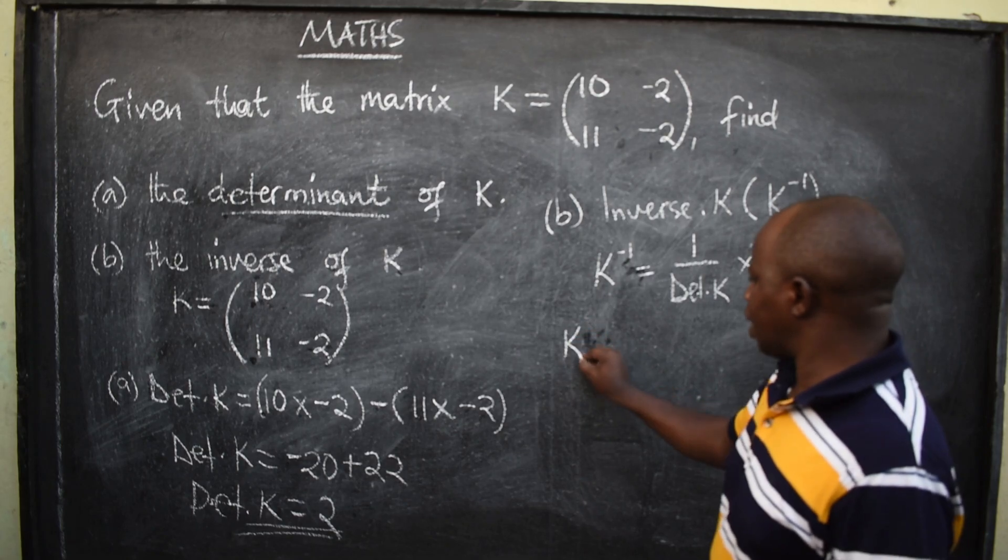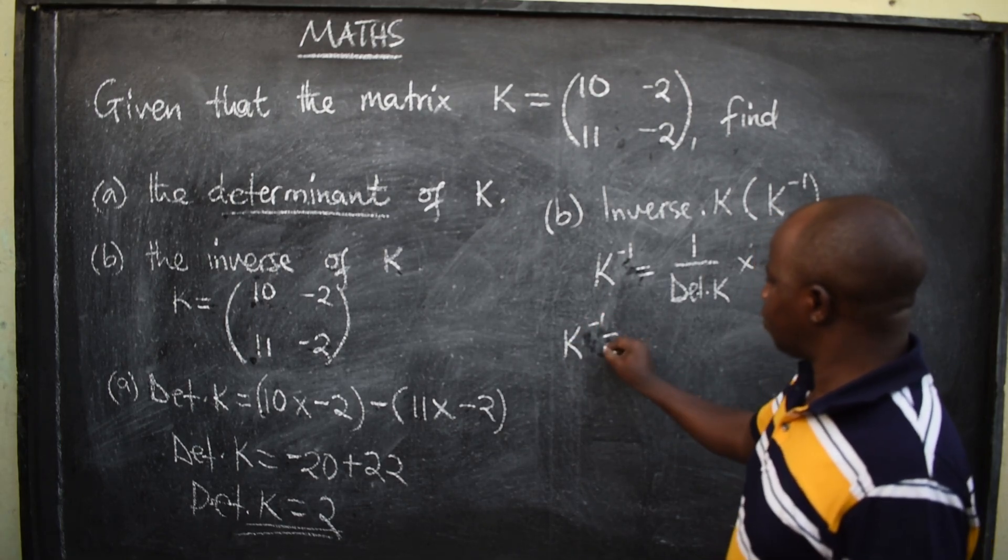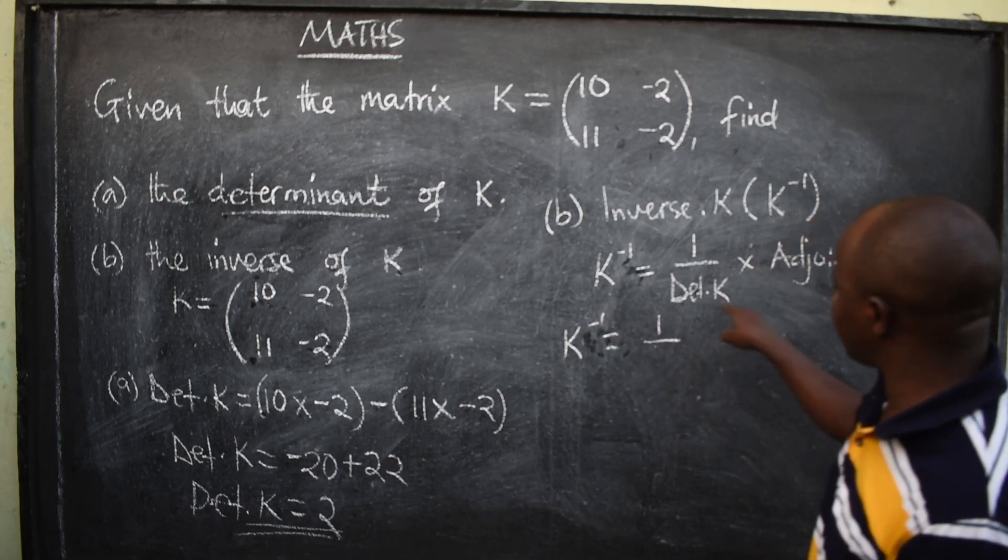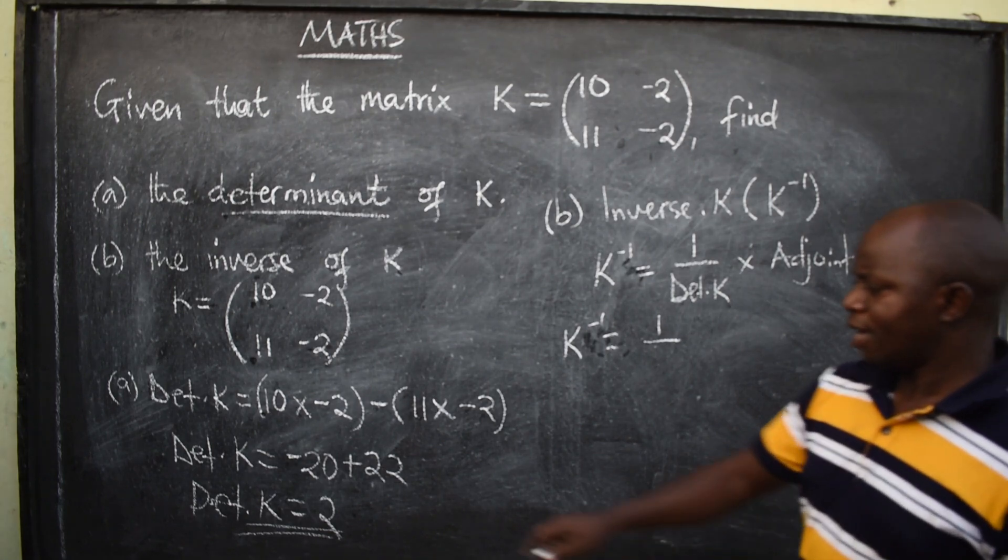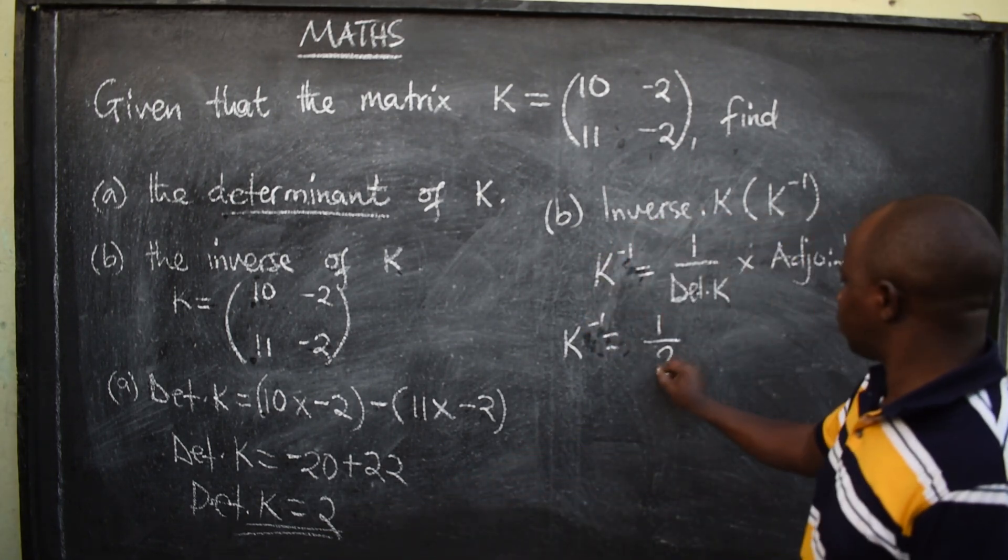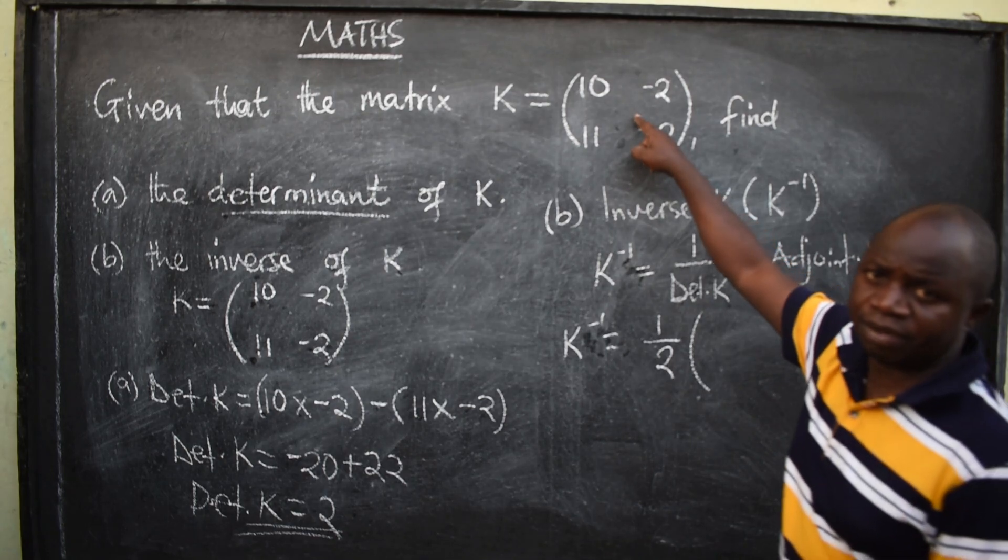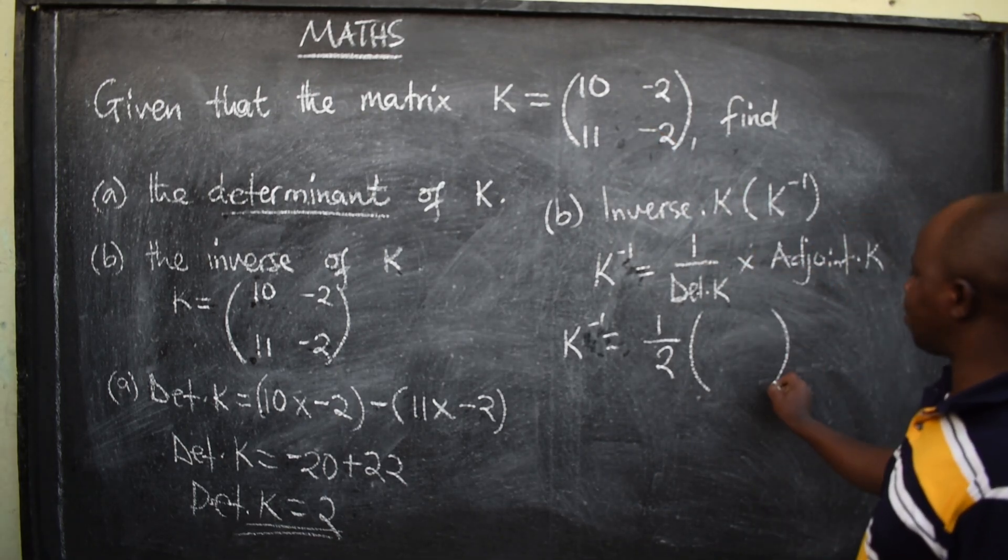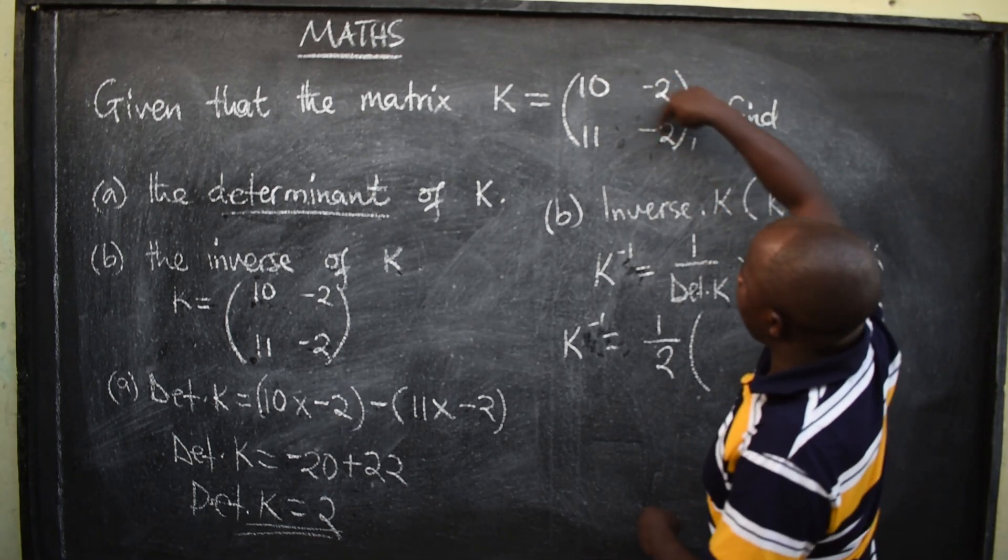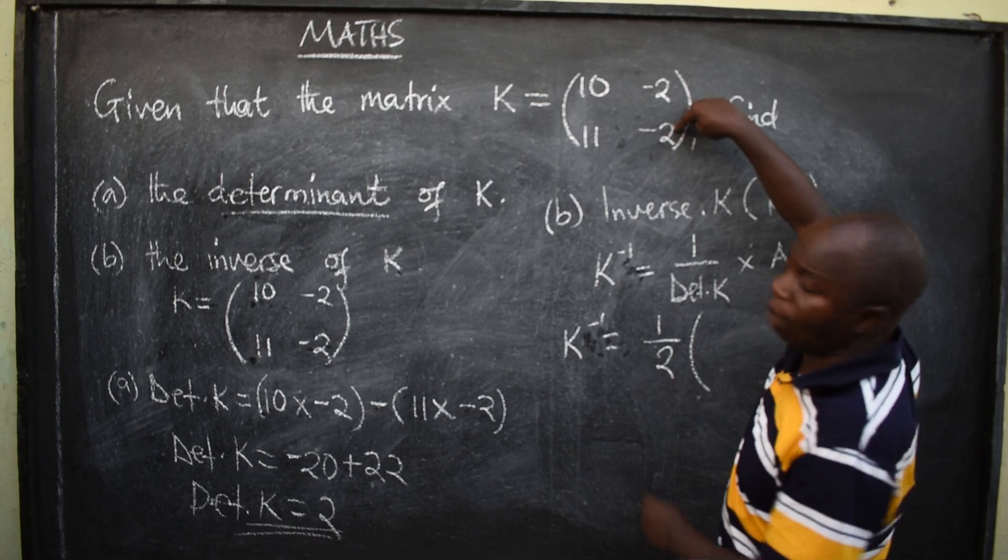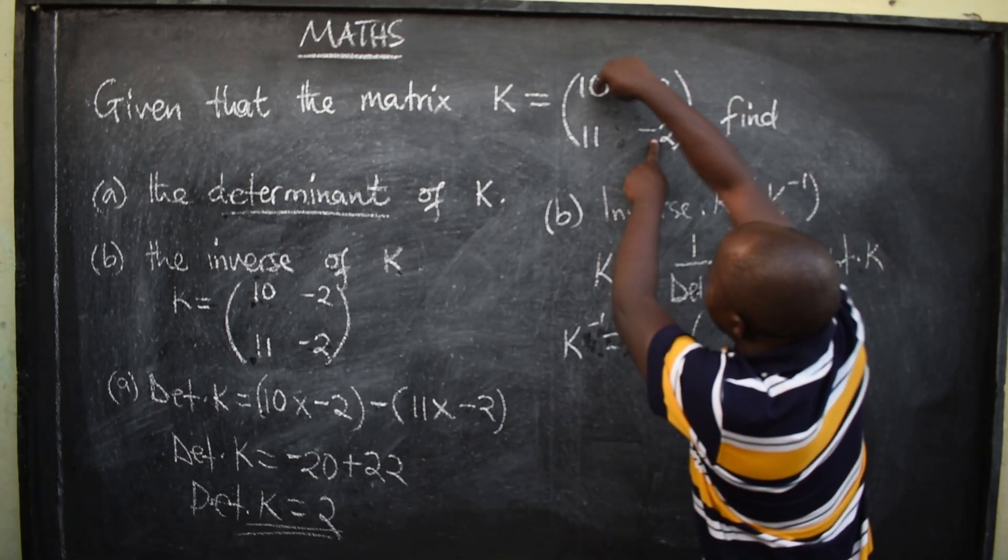So, I'm going to say, the adjoint of this matrix. How do you get the adjoint of the matrix? You swap the major. Swap them. 2 should be here, 10 should be here.